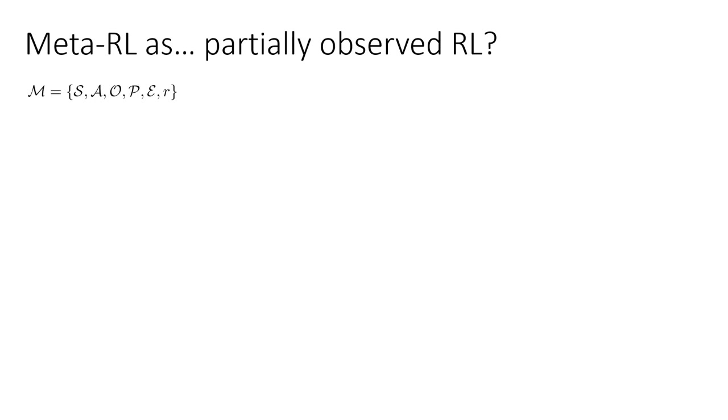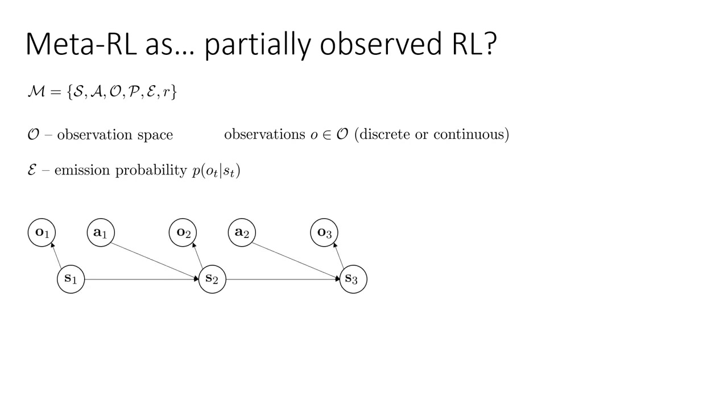So a partially observed MDP, just to remind everybody, is an MDP that has observations and observation probabilities in addition to states and actions. So it has an observation space and emission probability, which is the probability of observing a particular observation given a state. And this is the graphical model for a partially observed MDP from before.